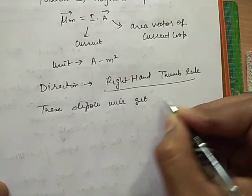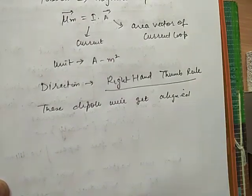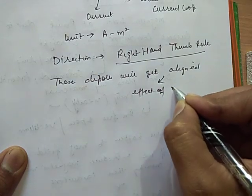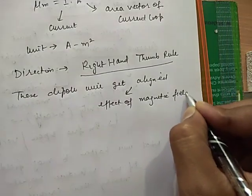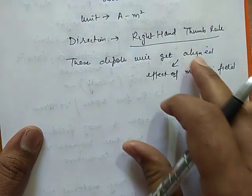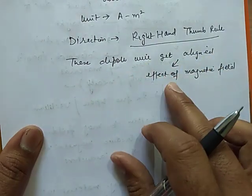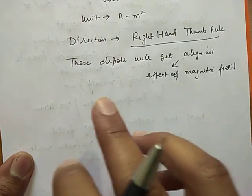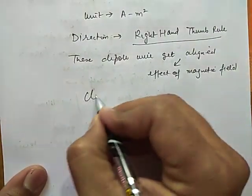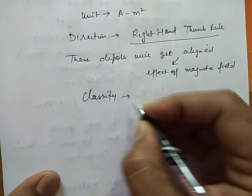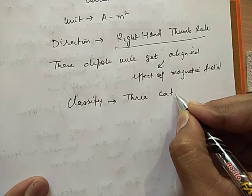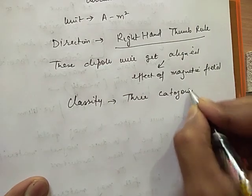Now what happens is that these dipoles will get aligned under the effect of magnetic field. Now depending upon different materials, the alignment of dipole will be different under the magnetic field. Now depending upon these we can classify materials into three categories.